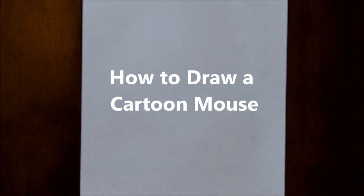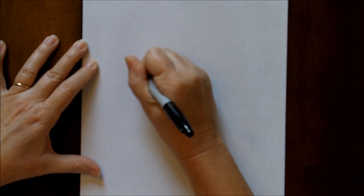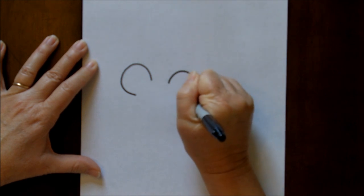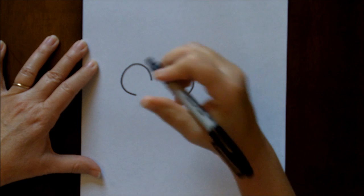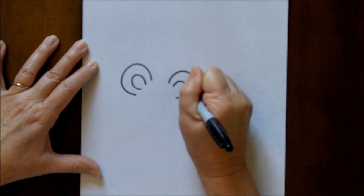Hi everyone, today we are going to be making a cartoon mouse. So let's get started. We're going to start out with his ears, and his ears are basically upside-down C's. And then inside each C we're going to make a smaller C just like that, a little bit of detail.